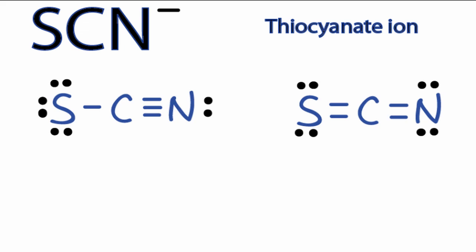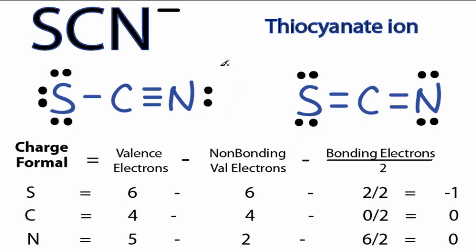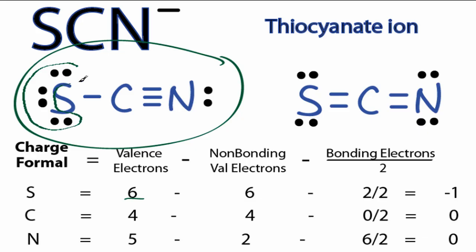Let's take a look at the formal charges for each one of these and see which one's going to be the best Lewis structure for SCN minus. Let's do this one first. For the sulfur on the periodic table, 6 valence electrons. Then we look at our Lewis structure non-bonding: there are 6 non-bonding, and then we have 2 involved in a chemical bond. We'll divide that by 2. 6 minus 6 minus 1. The sulfur has a negative 1 charge.